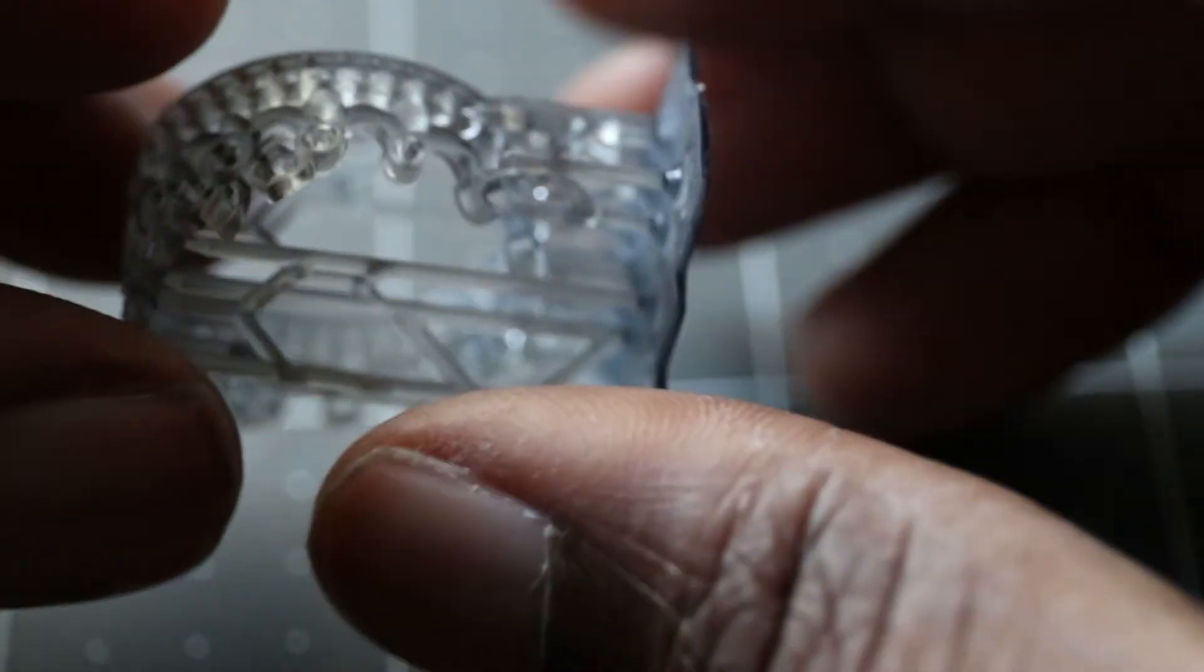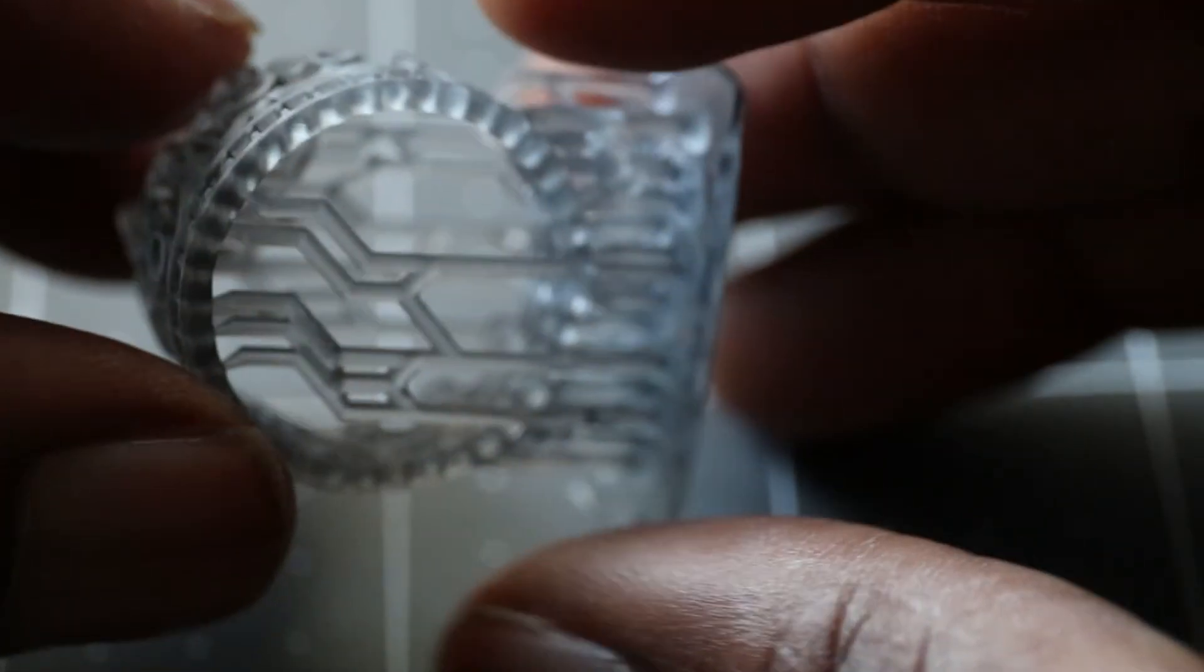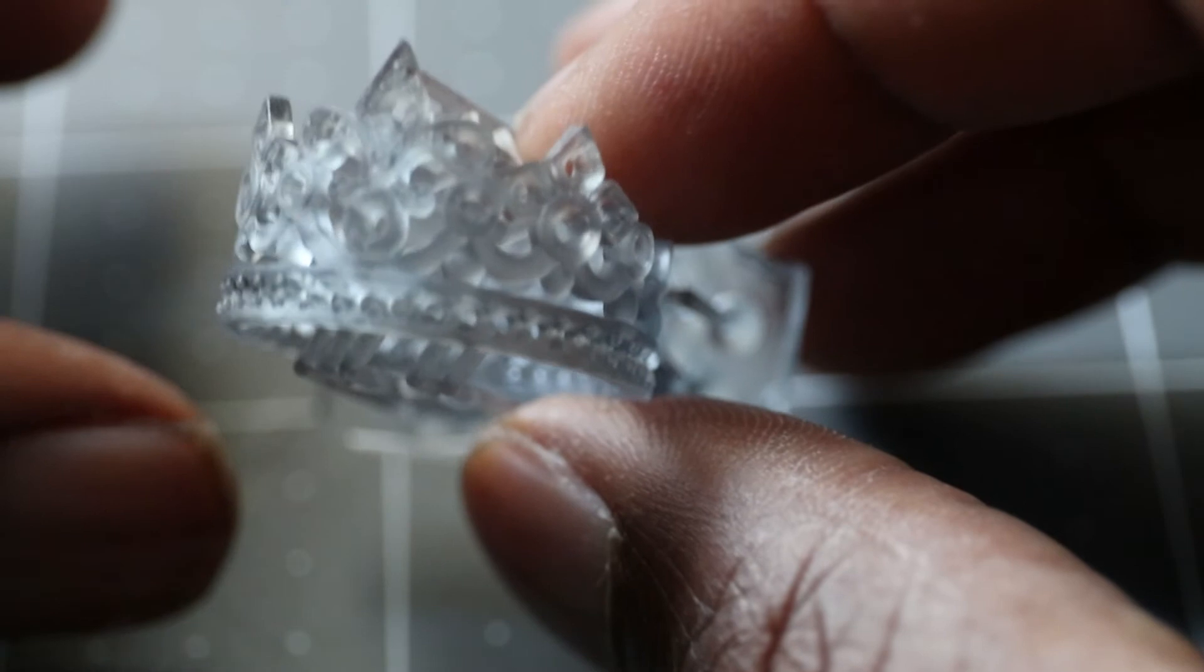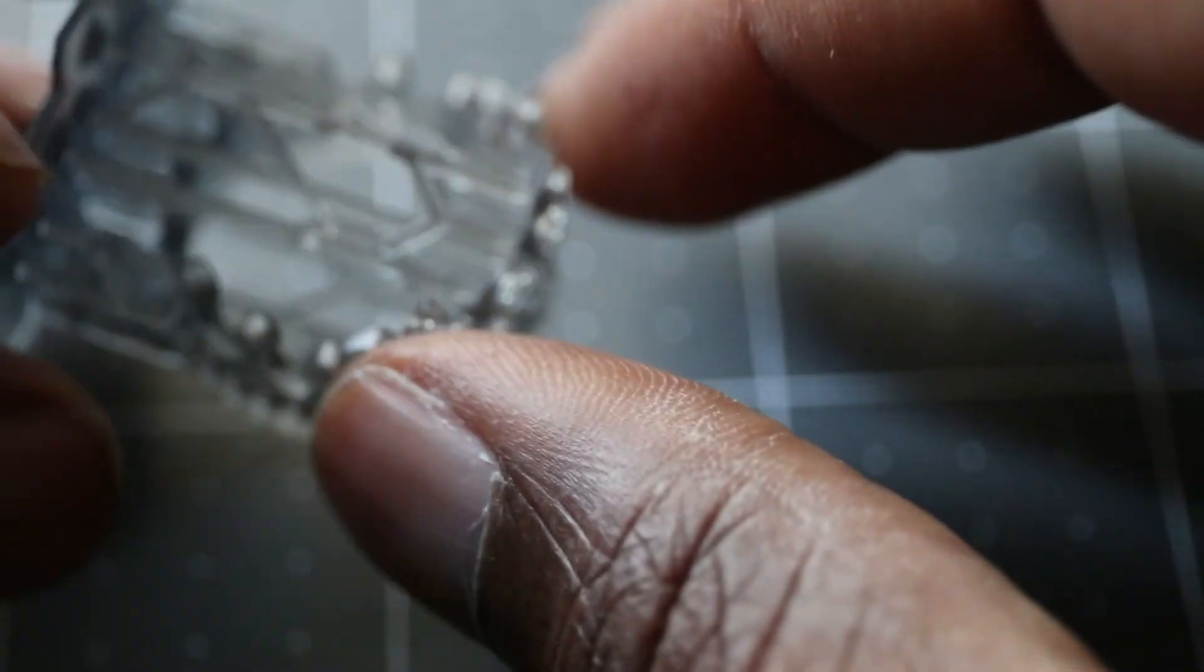Next we have the crown ring print. Obviously the detail is very good. I'm interested to see the detail on the underside where the supports are connected. From what I can tell this part looks like it retained them, but we'll see once I take the supports off.